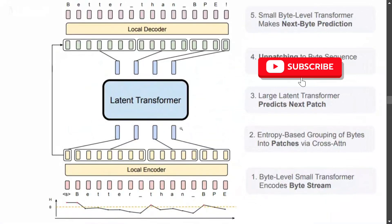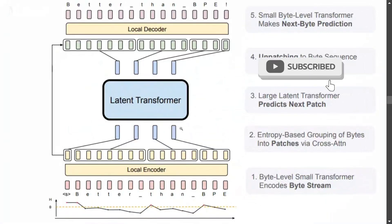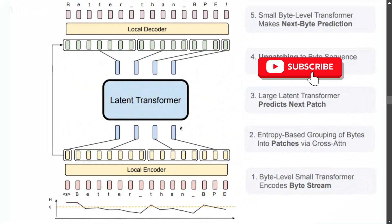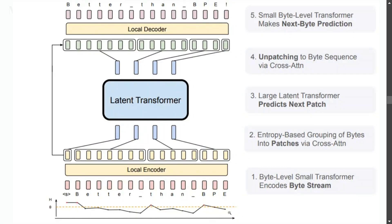Hi everyone. Recently Meta has released a new architecture for LLMs called the Byte Latent Transformer. It is said to perform almost equivalent to the traditional transformer, but with more efficiency, lesser memory, and better speed. The best part is it doesn't require tokenized tokens — you can input your entire sentence as raw bytes, and no tokenization layer is required. They have introduced something called entropy patches that helps segment the tokens internally.